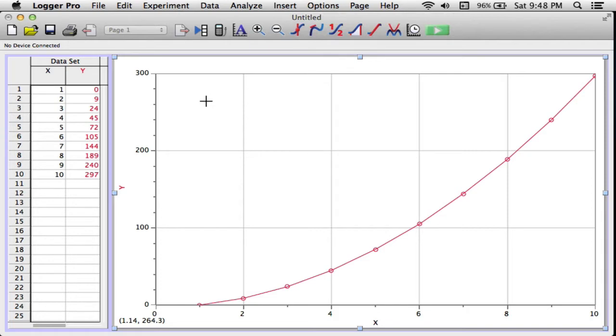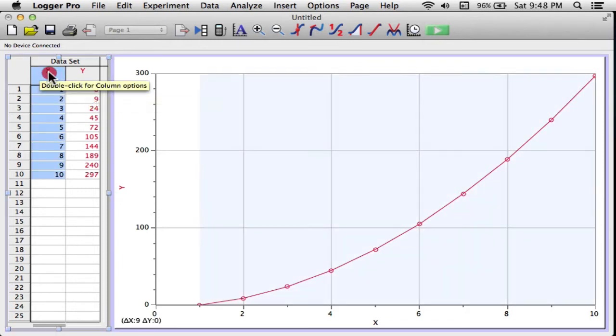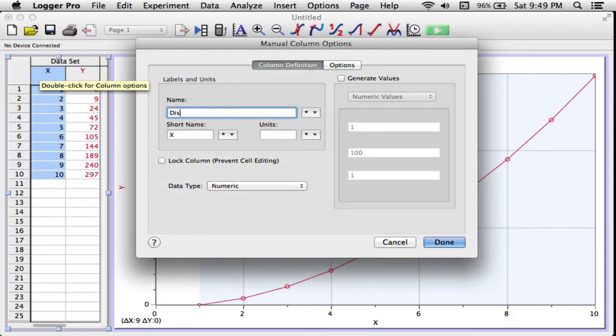I want to change my data set over here from x to y to force and displacement. Displacement is the x values, the horizontal values. To change it, I'm going to go over here in the columns, double click on the letter x, type the word displacement, and the short name is just going to be d. The units are going to be meters.